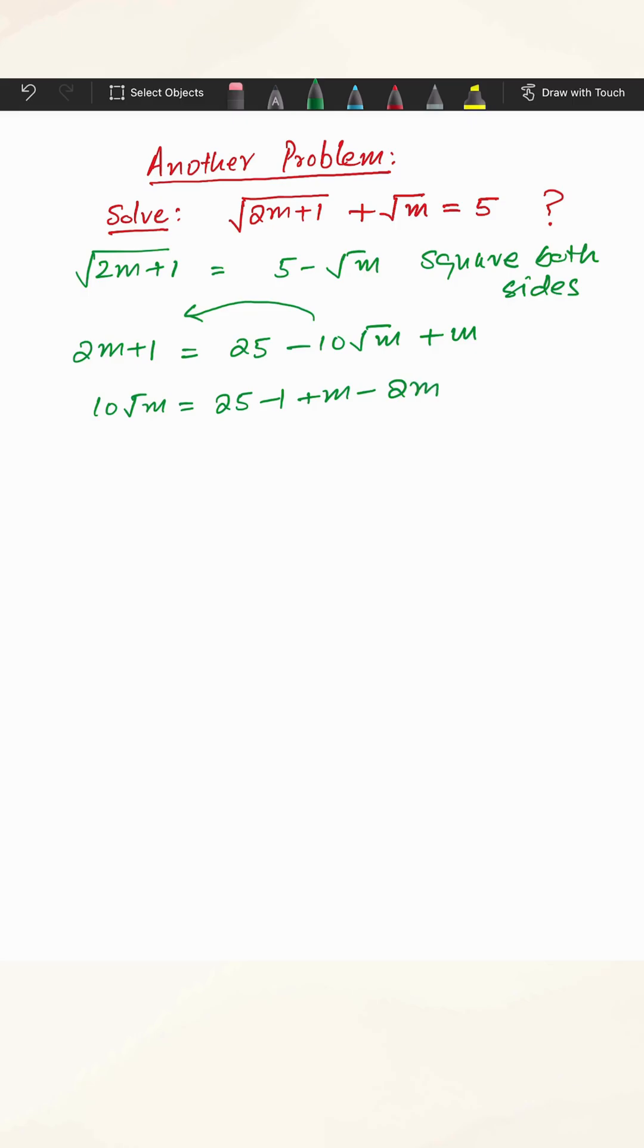You will simplify: 10 root m equals 24 minus m. And you have to square both sides again. Again, the right side is a binomial. We have to square it. So it's 100m equals 24 squared, this is 576 minus 48m plus m squared.